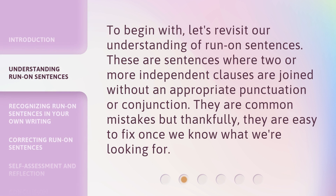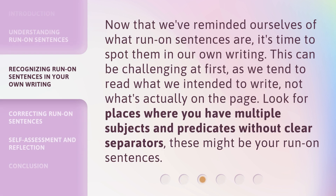To begin with, let's revisit our understanding of run-on sentences. These are sentences where two or more independent clauses are joined without appropriate punctuation or a conjunction. They are common mistakes, but thankfully they are easy to fix once we know what we're looking for. Now that we've reminded ourselves of what run-on sentences are, it's time to spot them in our own writing. This can be challenging at first, as we tend to read what we intended to write, not what's actually on the page. Look for places where you have multiple subjects and predicates without clear separators — these might be your run-on sentences.